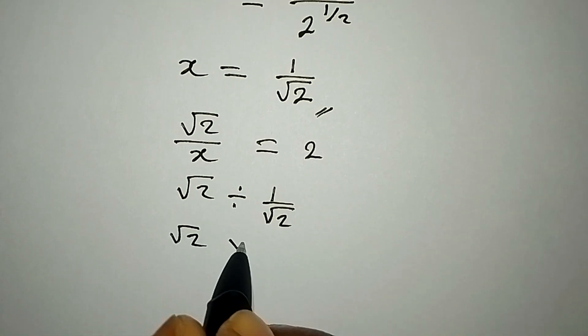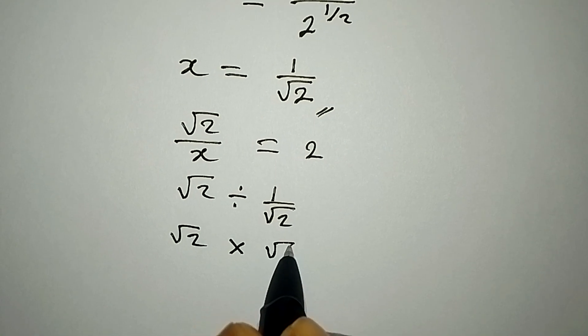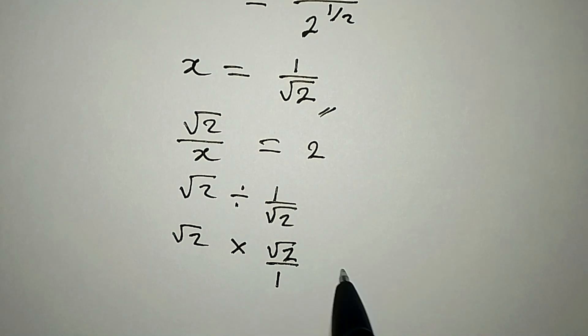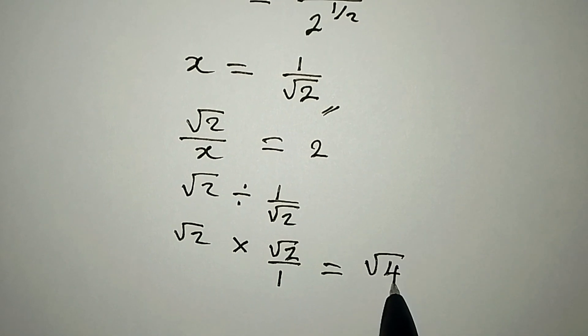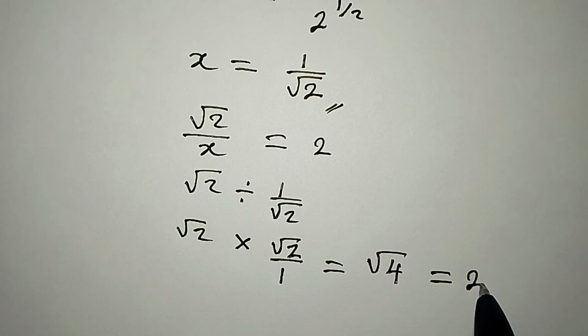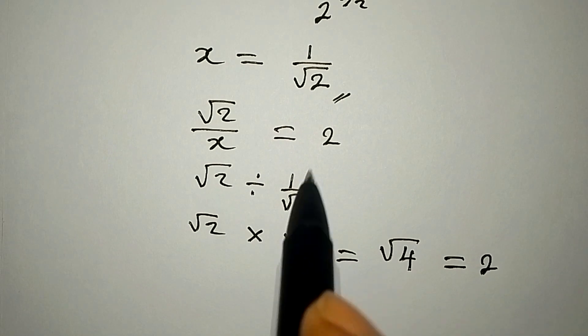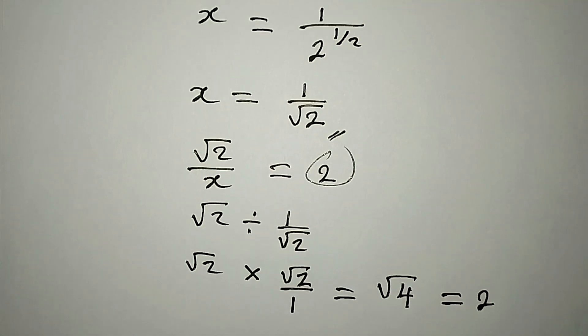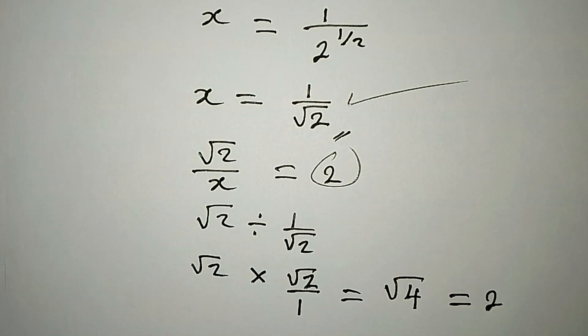So we have square root of 2 multiplied by square root of 2 over 1, and this will give us square root of 4, and square root of 4 is 2. Meaning that we are very correct to say that our x is 1 over square root of 2.